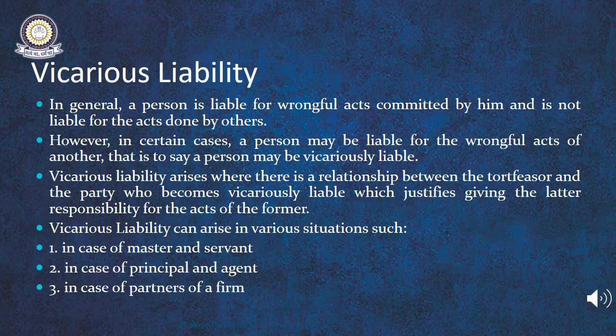We have understood through different discussions that a person is liable for all the wrongful acts, or the tortious acts, which are done by him and not for those acts which are done by somebody else. Thus, a person is liable for the wrongful acts which he himself does and not somebody else's acts. However, there are certain cases in which a person can be liable for the tortious acts of somebody else, and these are the cases which fall under the concept of vicarious liability. So essentially vicarious liability means that a person is liable for the wrongful acts of somebody else. This arises when there is a relationship between the tortfeasor and the party who becomes vicariously liable which justifies giving the latter the responsibility of the acts of the former.